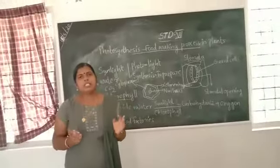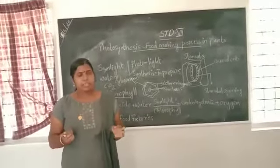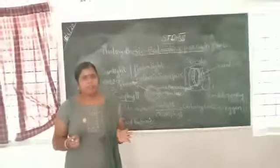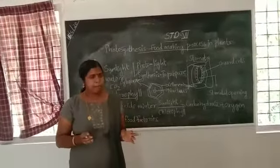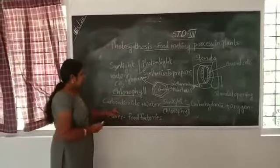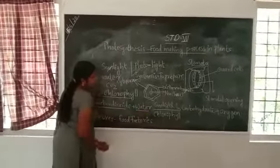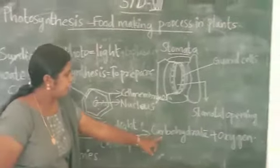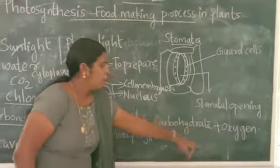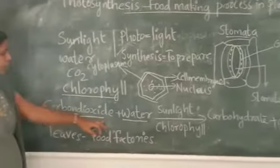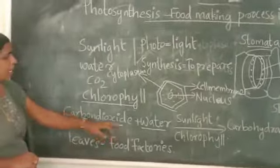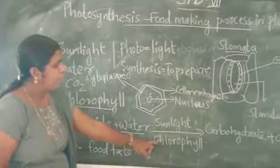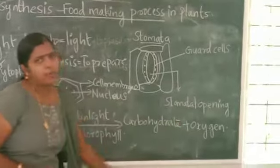Photosynthesis is a unique process. In the absence of photosynthesis, there would not be any food. The process can be represented by an equation: carbon dioxide plus water in the presence of sunlight and chlorophyll produces carbohydrate and oxygen. This is the equation representing photosynthesis.